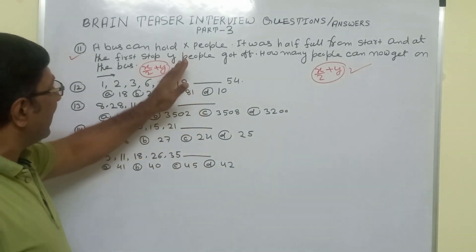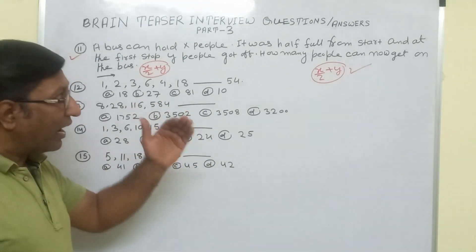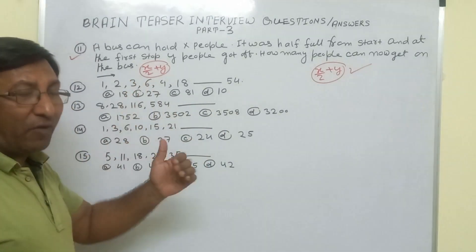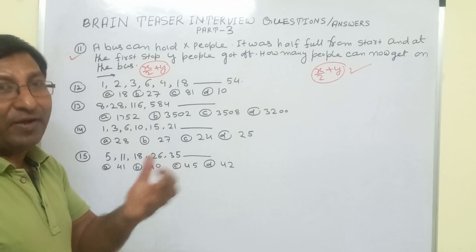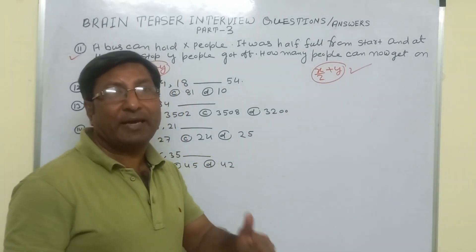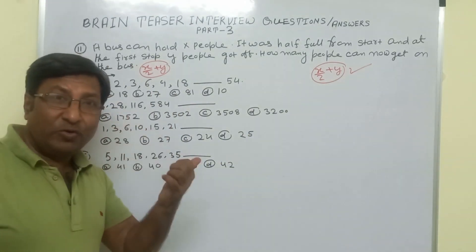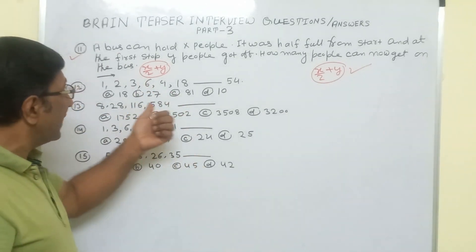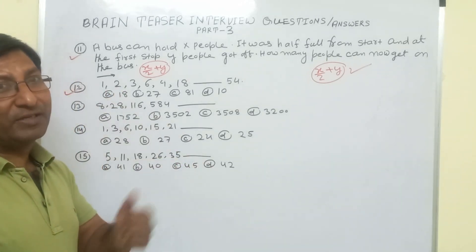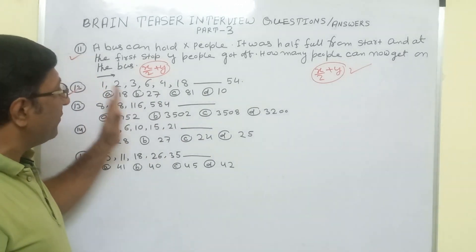To summarize: the total capacity of the bus is x people. From the start, half the seats were full, so x/2 seats were vacant. At the first stop, y people got off, so y more seats became vacant. Therefore, x/2 + y people can get on the bus. Now see the second question of the series. For this type of series question, as I told you in parts 1 and 2, there is no fixed method, formula, or technique — only your mind to figure out how the series is going.